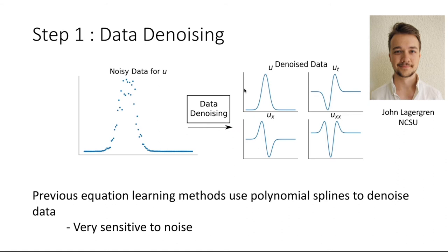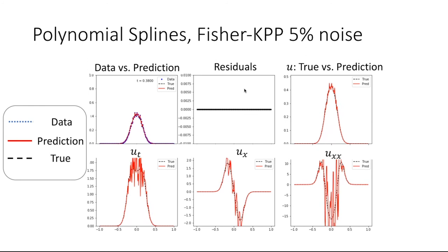I've been working very closely with a graduate student at NC State, John Lagergren from the math department, on this first step of data denoising. The goal is to go from noisy data and figure out a clean version that accurately estimates how it changes over both time and space. The previous state-of-the-art from equation learning methods was to use polynomial splines, where you look at a small number of data points, fit a simple polynomial function, and then use those polynomials to estimate derivatives — that's how you'd obtain cleaner versions of the data.